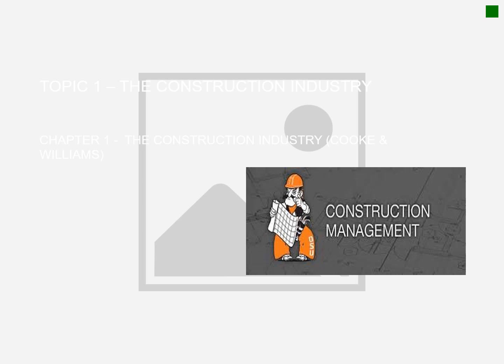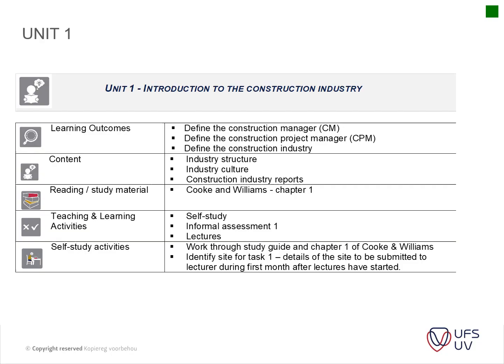Let's start with topic one, Chapter One: The Construction Industry — Cook and Williams. As mentioned in the introduction, these first two units aren't that important for later on, although we're going to focus on them a little bit at the beginning, just to give you a background of how the construction industry works. Distance learning students will understand much of these items because you're already in the industry.